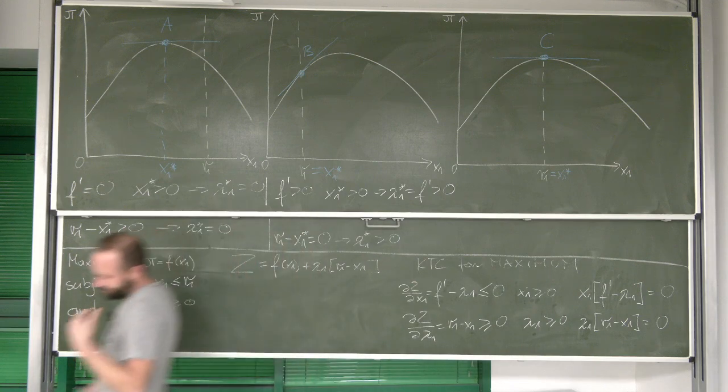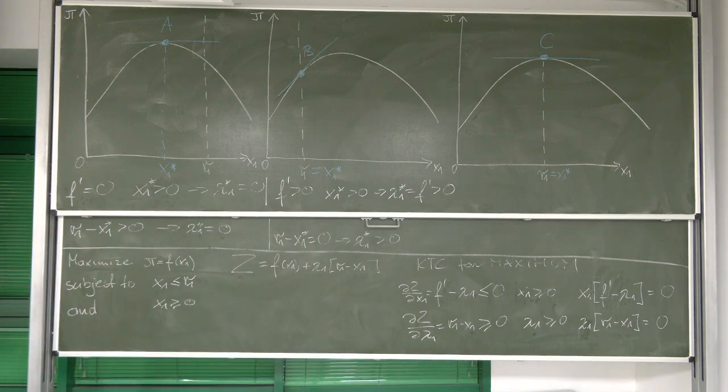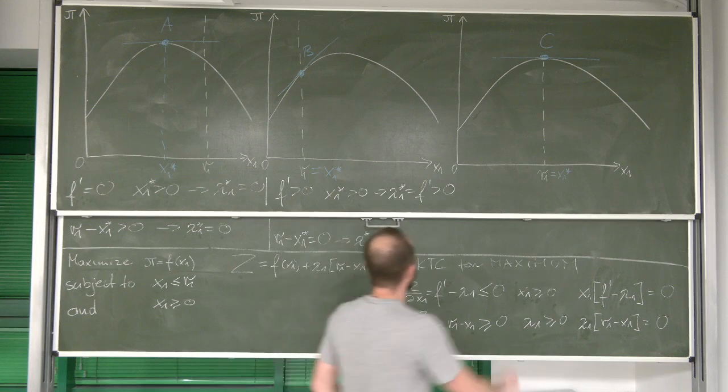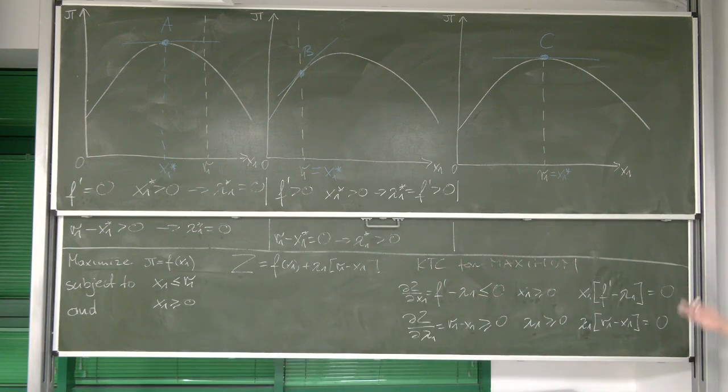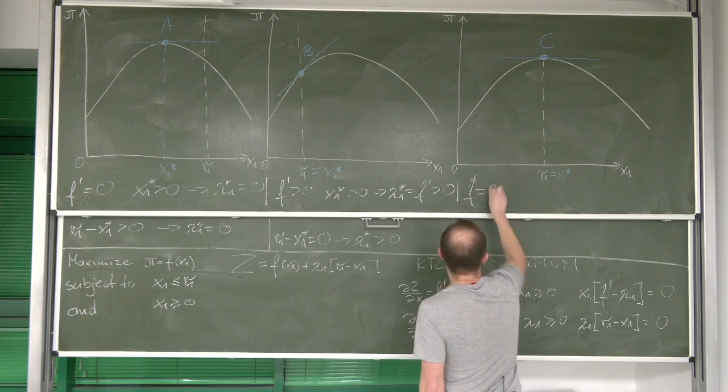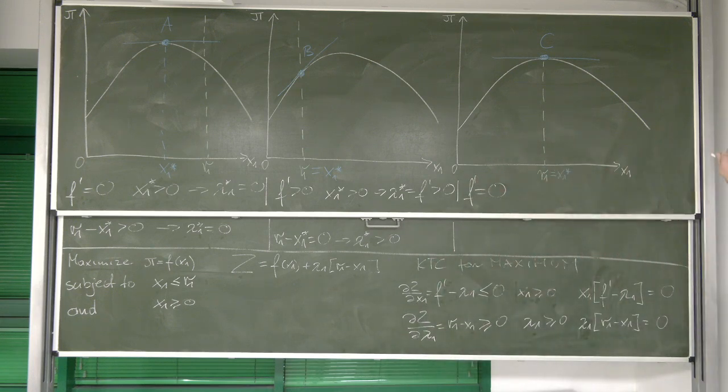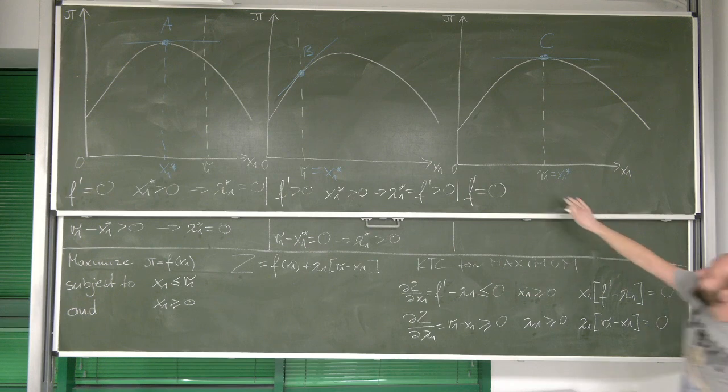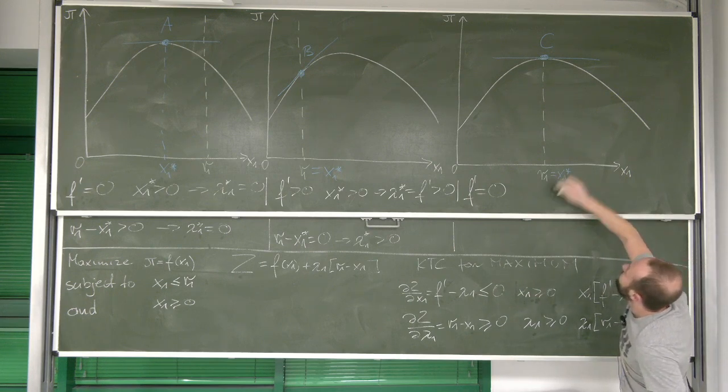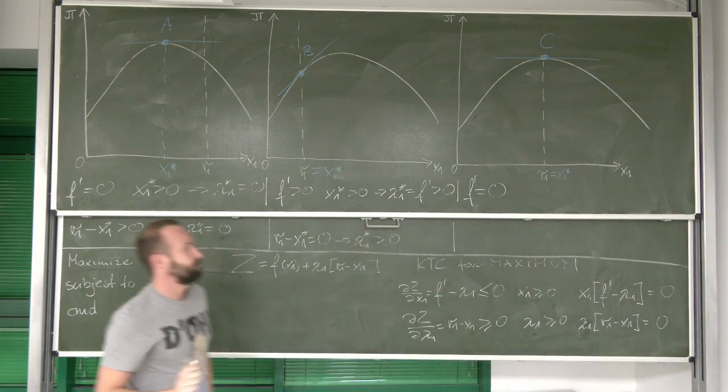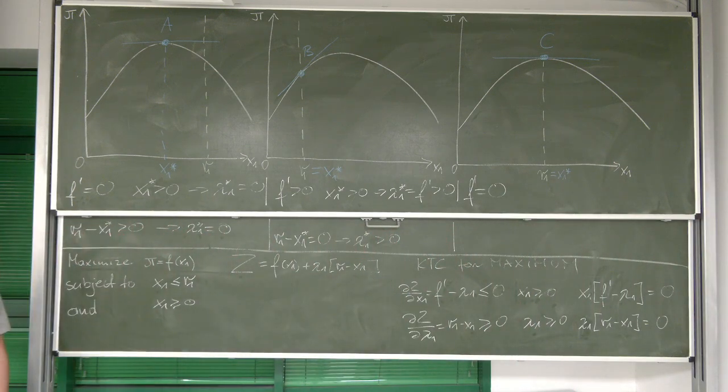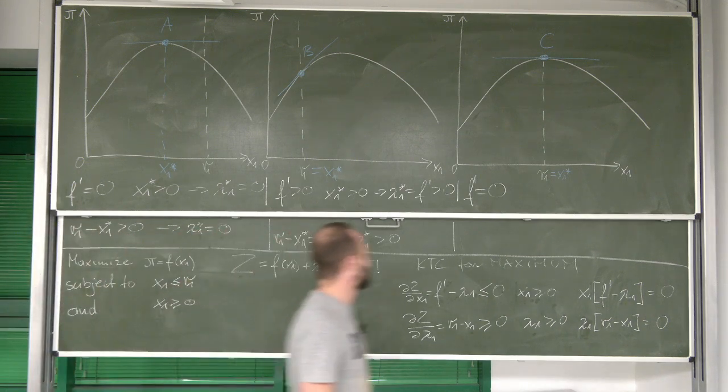And finally, the last case, case number three, this is a special case. But let's see it anyway because it's kind of interesting. What do we see over here? We see the first derivative is zero. We are at the top. However, look, in this case, it happens that top of the function, the maximum is at the constraint. This is why it would be a special case. Of course, we see that x1 is bigger than zero.